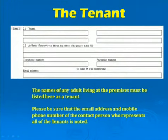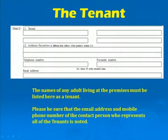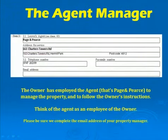The tenant, or tenants — more accurately, the names of any adults living at the premises must be listed here. As a tenant, please be sure that the email address and mobile phone number of the contact person who represents all of the tenants is noted. This is important. The owner has employed the agent — and that's us — to manage the property and to follow the owner's instructions.